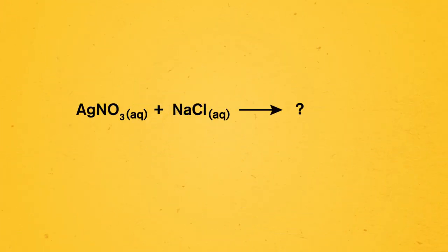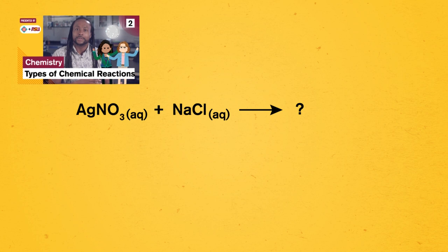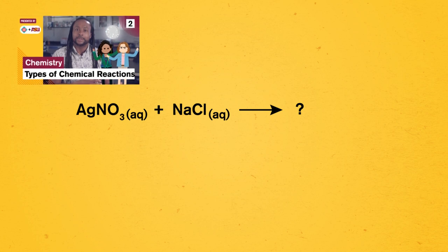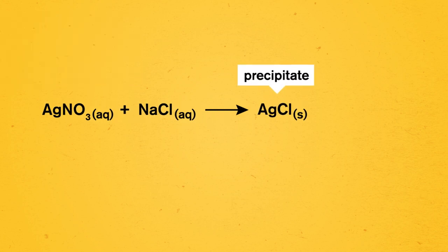Seeing both equations helps us get the whole picture of what's happening in a reaction. We don't necessarily need special fashion statements or cool gadgets to identify the molecular and ionic equations — it's a talent we can acquire with practice. As an example, let's start with the precipitation reaction between aqueous silver nitrate and an aqueous sodium chloride solution. We can classify this as a double displacement reaction, so we know the products will be a solid precipitate of silver chloride and aqueous sodium nitrate. This final written reaction is our molecular equation.